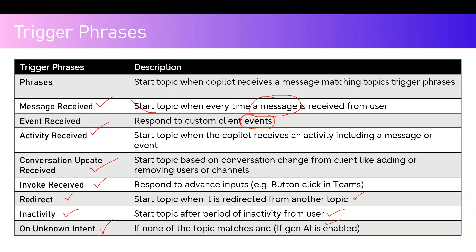If none of the topics match and Gen AI is enabled within your Copilot Studio configuration, then the Unknown Intent trigger is used. This is the most important trigger because if no topic gets matched, it relies completely on artificial intelligence to understand and respond. For example, if you've configured most topics but can't cover everything, any unmatched conversation will fall back to the large language model, which will then present a response to the user.